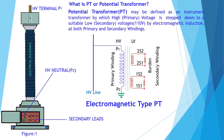Voltage increases at both primary and secondary windings by electromagnetic induction. In this case, heavy insulation is required for this type of PT, so cost becomes high and increases according to higher voltage rating. A potential transformer is used for measuring or metering purposes, and protection or relaying purposes.